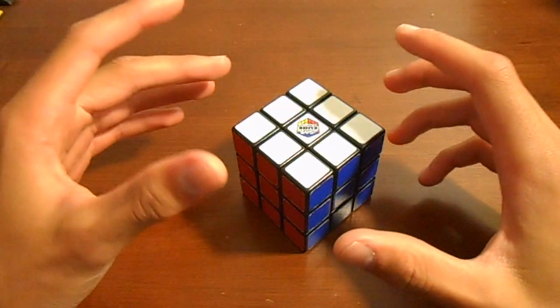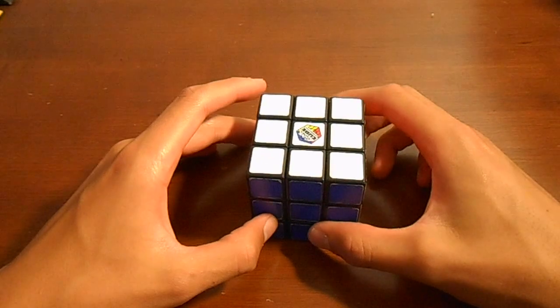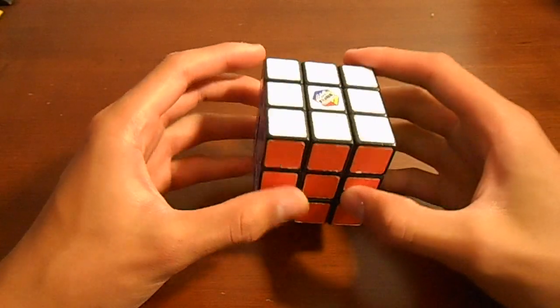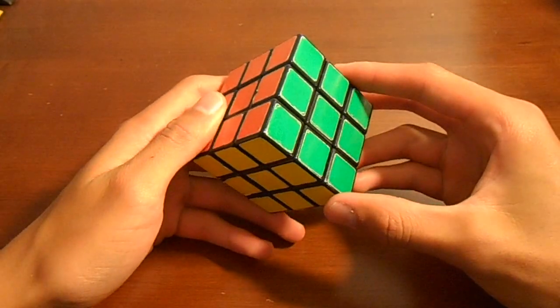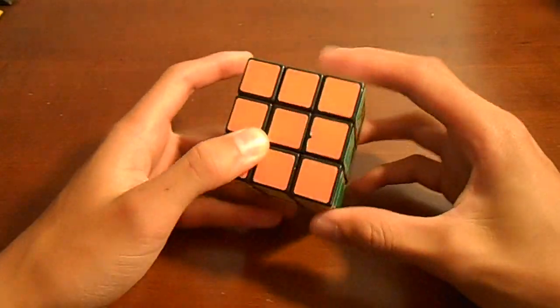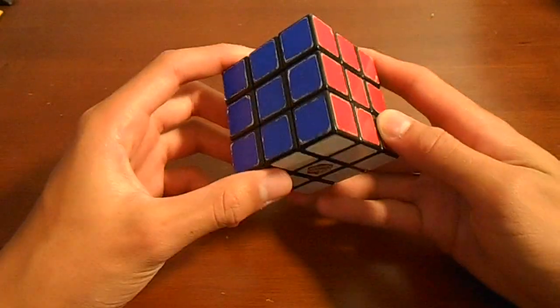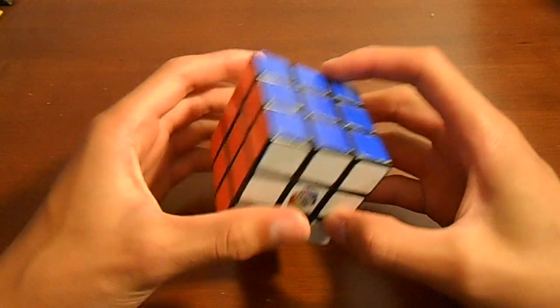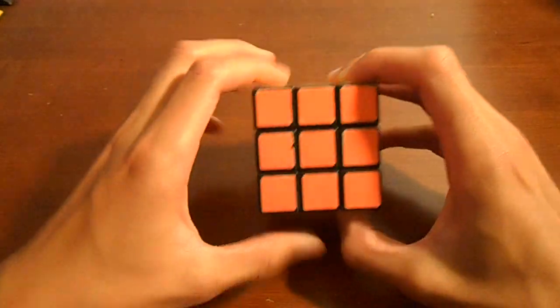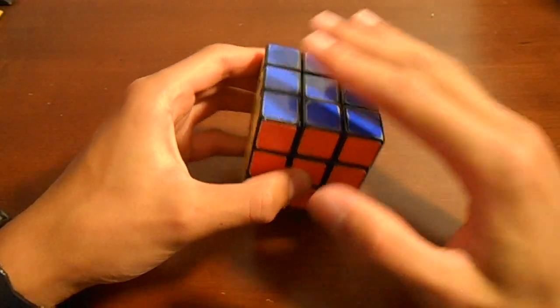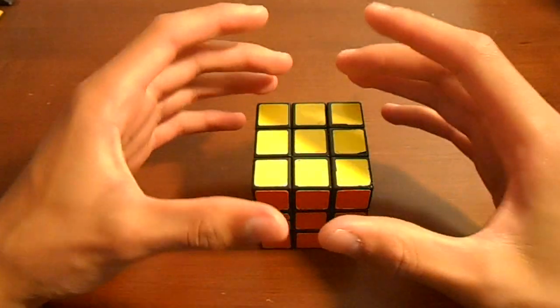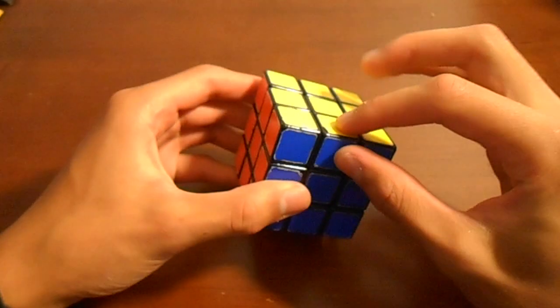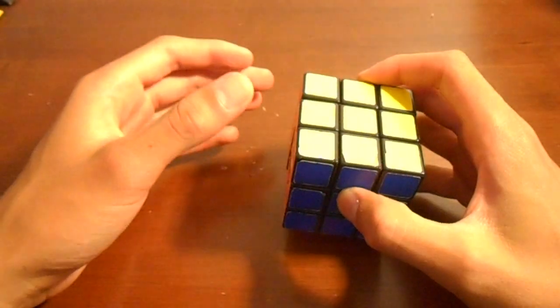Before we get into the actual solving of the Rubik's Cube there are a couple of main things that should be gone over. The first thing is that there are six sides and there are six sticker colors that correspond with each side. The second thing is that you have to think of the cube as pieces and not stickers because the stickers are attached to the pieces and that's what really matters.